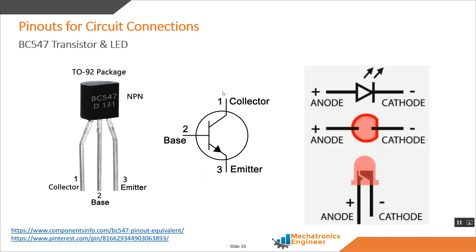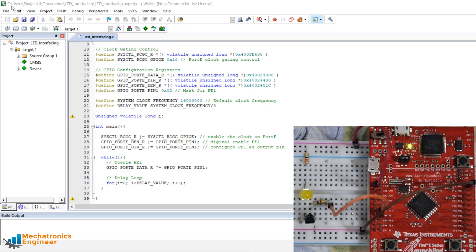The BC547 transistor has three pins: collector, base, and emitter. When facing the flat surface, the leftmost pin is the collector, the middle one is the base, and the rightmost pin is the emitter. Since an LED is a type of diode, connecting it correctly requires attention. On the physical LED, the longer pin is the anode and the shorter one is the cathode. Additionally, a flat surface on the circumference of the LED indicates the cathode side.